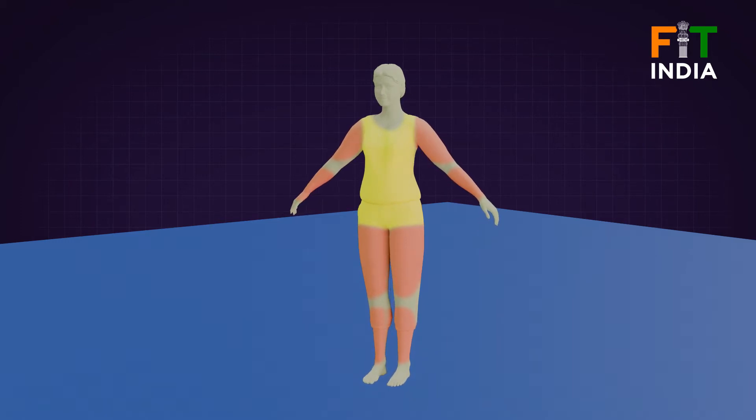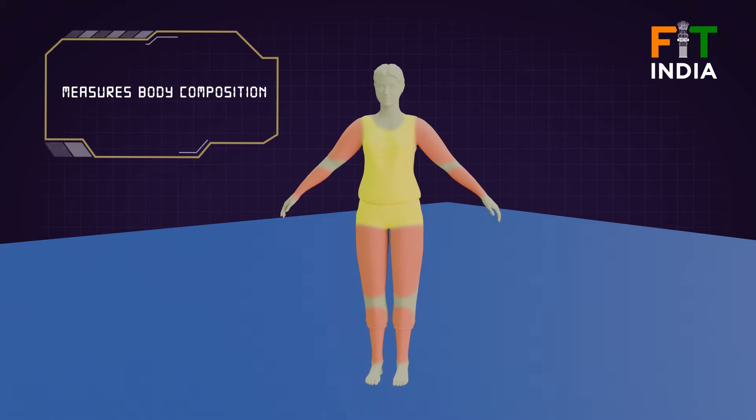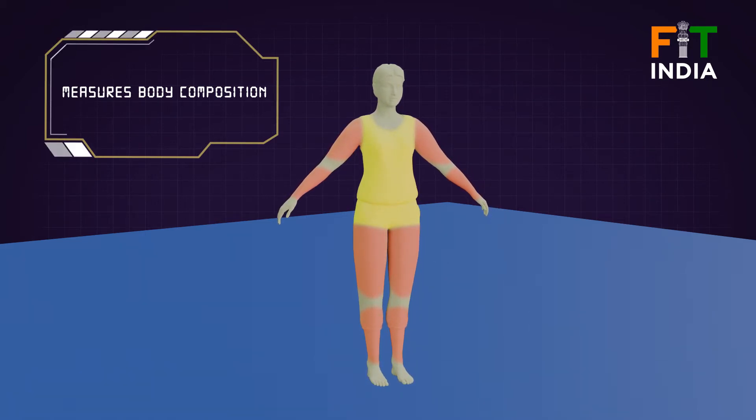Body mass index or BMI is used to measure one's body composition, which is the distribution of muscles and fat in the body.